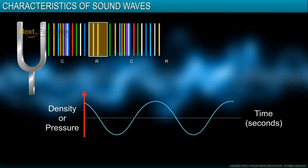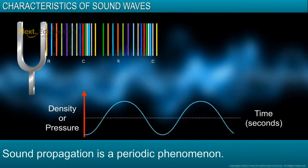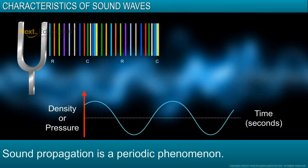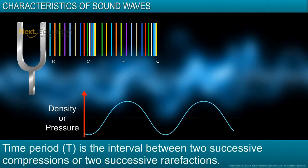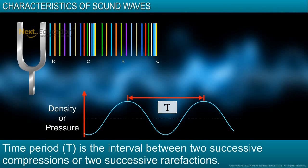Since a compression and a rarefaction follow each other in succession, sound propagation is a periodic phenomenon. The interval between the generation of two successive compressions or two successive rarefactions is constant and is referred to as the time period of the wave. Time period is denoted by T and is measured in seconds.